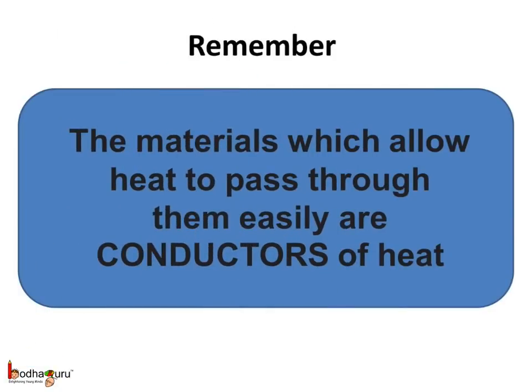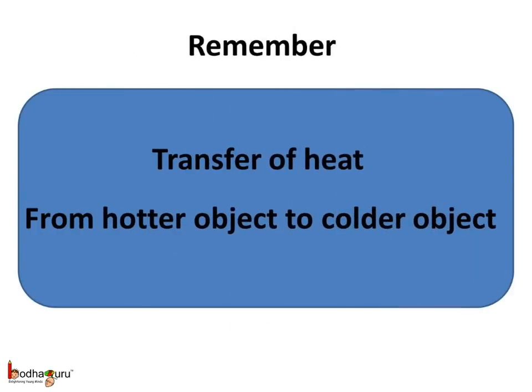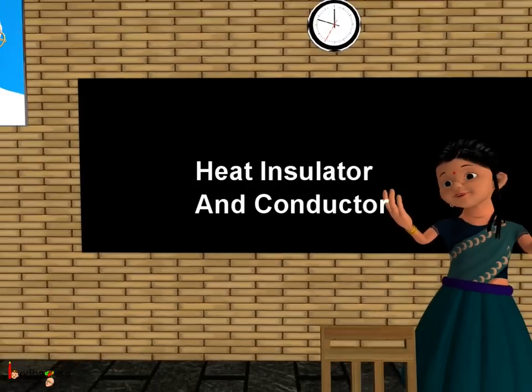So remember, the materials which allow heat to pass through them easily are conductors of heat — for example, iron, copper, steel, etc. And the materials which do not allow heat to pass through them easily are called insulators; they are poor conductors of heat — for example, plastic, wood, etc. Also, heat always flows from a hotter object to a colder object. That's all for now. Bye-bye, children.